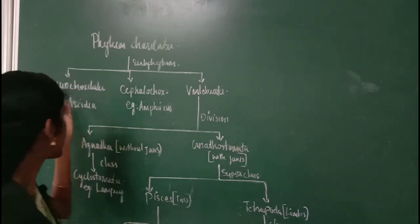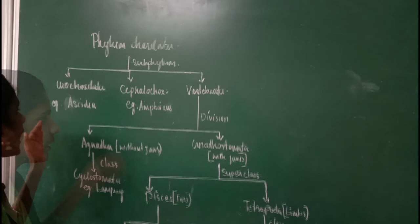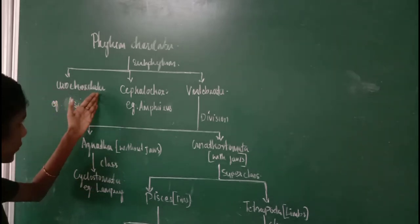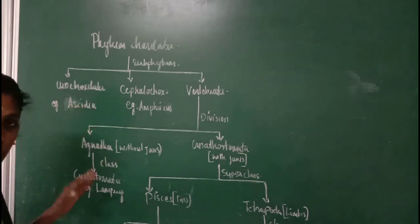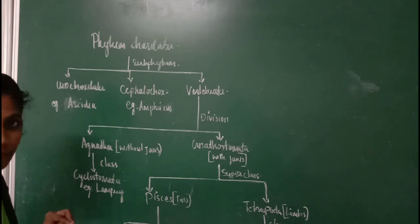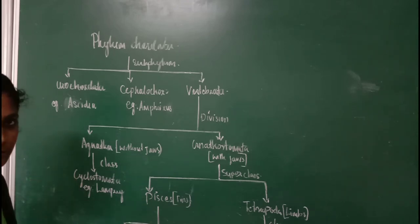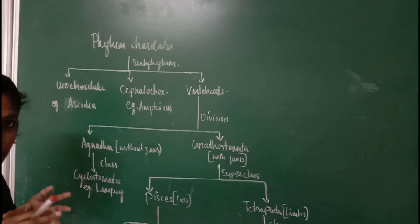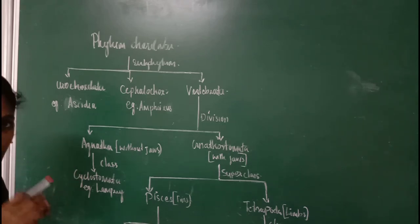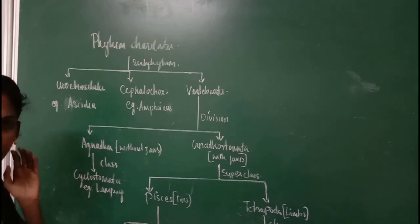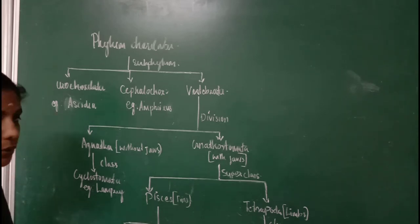Shall we study about Urochordata? Animals which come under the category of Urochordata have notochord during their larval stage. This notochord can be seen during their larval stage, and after the larval stage it may disappear. It is especially confined to the larval tail region, so animals which have notochord in their larval tail will come under the category of Urochordates.